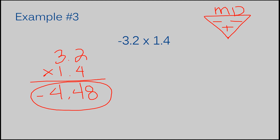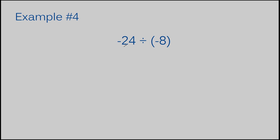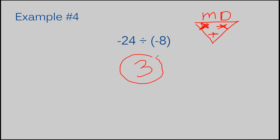Let's move on to example number four. I have negative 24 divided by negative 8. Just like the last example, I use the triangle method. Before I even begin, I already know my answer is going to be positive. I have a negative here — that uses up one negative slot. I have a negative 8 here — that uses up the other negative slot. I just have the plus sign left, so the answer is positive. So all I need to do is 24 divided by 8, which is 3. The answer to example number four is 3.